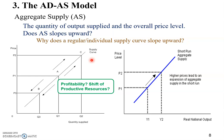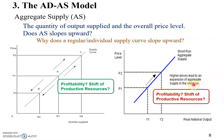Now let's look at the aggregate supply curve. We actually have two aggregate supply curves: one for the short run and one for the long run. Let's look at the short run first. If the short-run supply curve slopes upward, what we find is that when there's an increase in the overall price level, the quantity of output produced increases on the graph from Y1 to Y2. Is that because of an increase in profitability, or is there a shift of productive resources?